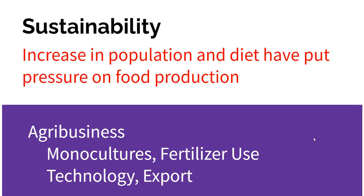The goal, of course, is to have sustainable food production. We want to have a diet and an amount of food that can handle an increase in population. As the population keeps increasing, there's more and more pressure to modify your food production system. In the United States, this gave rise to agribusiness.